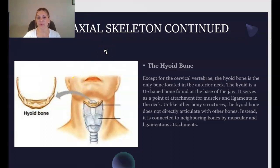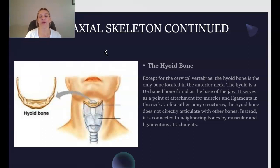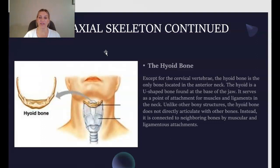Continuing with the axial skeleton, we have the hyoid bone. The hyoid bone is the only bone located at the anterior, or front, of the neck — except for the cervical vertebrae. It is a U-shaped bone found at the base of the jaw and serves as a point of attachment for muscles and ligaments in the neck that help you turn your head and swallow. Unlike other bony structures, the hyoid bone does not directly articulate with other bones; instead, it is connected to neighboring bones by muscular and ligamentous attachments.